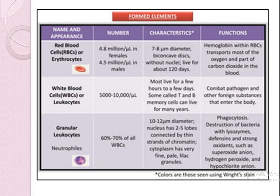Granulocytes — for example, neutrophils. Neutrophils are present at 60 to 70 percent of all WBCs. The size of neutrophils is 10 to 12 micrometers in diameter. They are involved in the phagocytosis process.